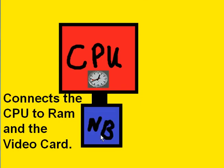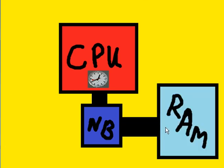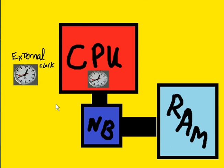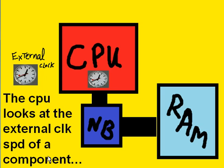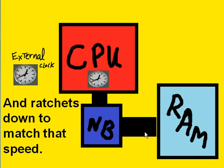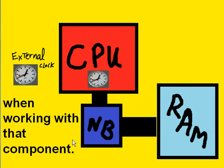Then we have a north bridge that connects the CPU to RAM and the video card. There's the RAM, there's the connection, and there's the external clock. PC components run at different speeds. The CPU looks at the external clock speed of a component and ratchets down to match that speed when it's working with that particular component.